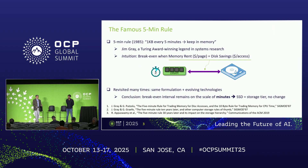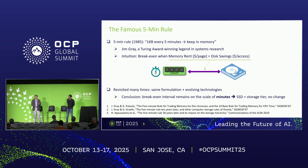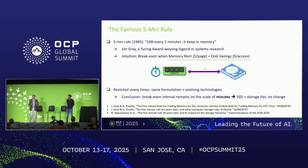Back in 1985, Jim Gray formulated this five-minute rule. It's very simple — for a 1K byte page, if that page is accessed every five minutes or shorter, we should keep it in memory. The intuition is simple: we compare the cost of renting memory against accessing disk. Over the decades, multiple revisits kept reaffirming this same five-minute rule conclusion.